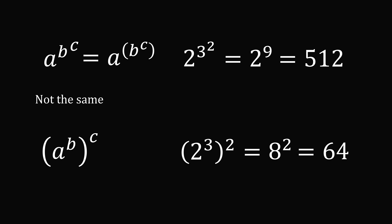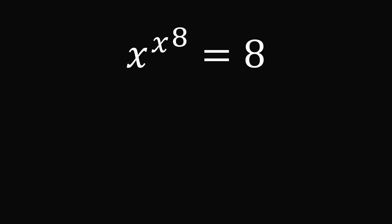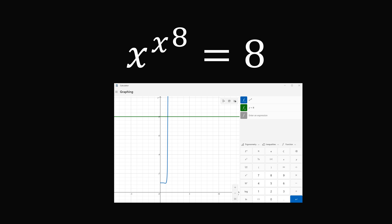You want to evaluate the exponents going from the top. So how do we solve our problem? We have x to the power of x to the power of 8 equals 8. One thing we could do is graph it. For positive real values of x, this grows exponentially. The line y equals 8 is a straight line, and the two graphs intersect exactly once. Going down to the x value, we can estimate it's approximately equal to 1.3.